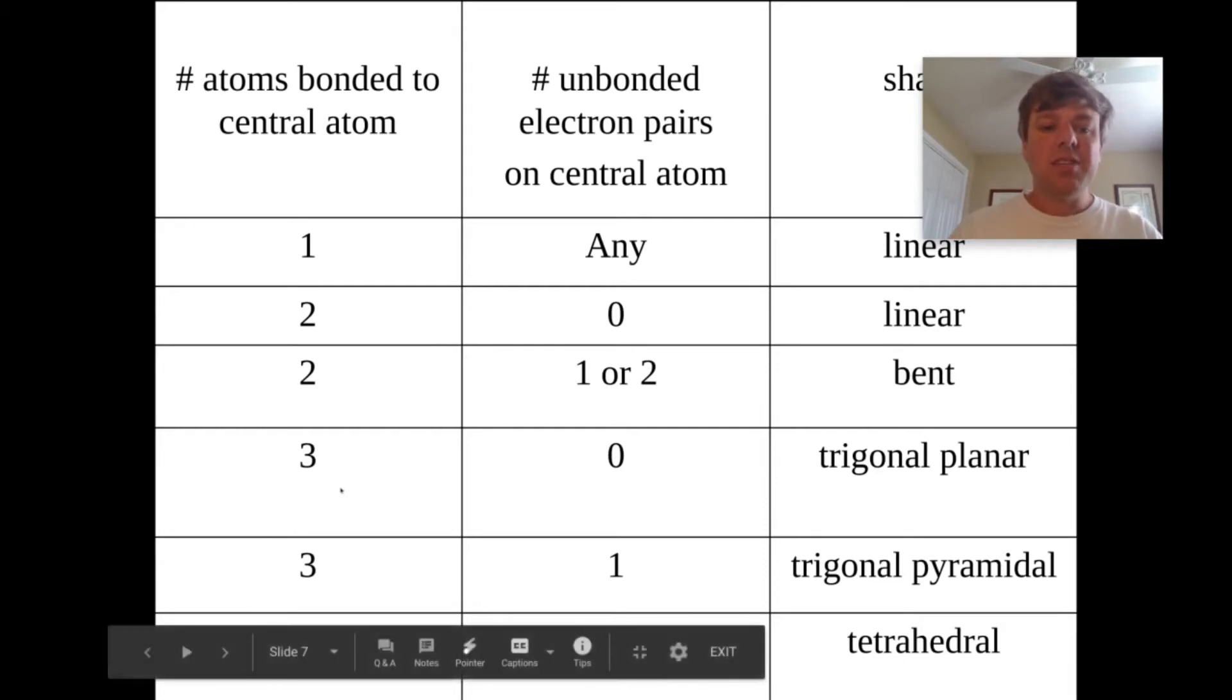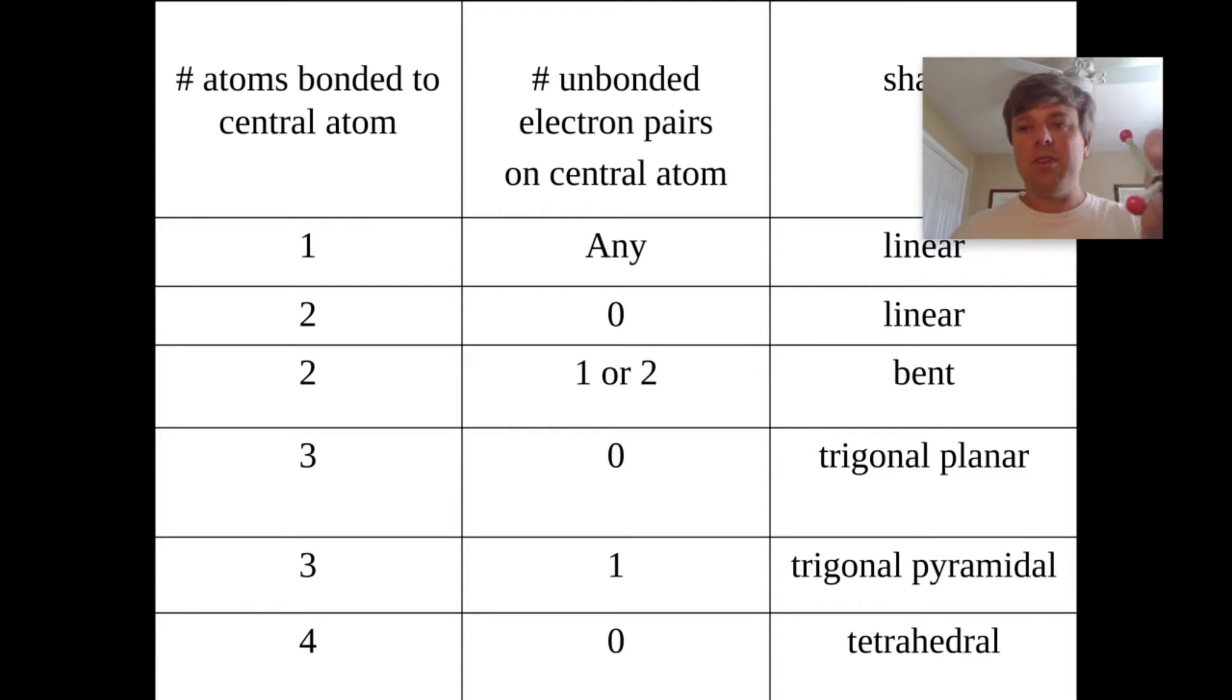If you have three things attached to the central atom, then you can either have no unbonded pairs of electrons, in which case the molecule would be trigonal planar, like so. Or if you have an unbonded pair or a lone pair of electrons on there, then it would be trigonal pyramidal, like this, because that would be that extra pair of electrons that kind of deflects everything down. And then, if you have four things attached to the central atom, it's tetrahedral.